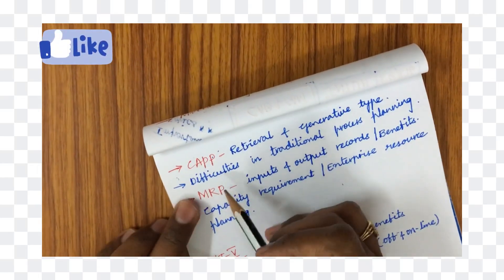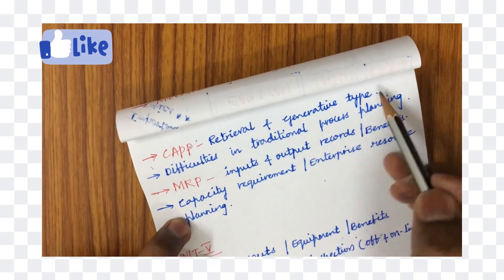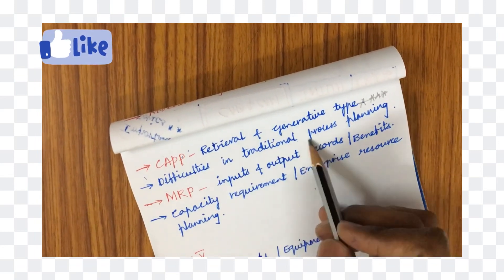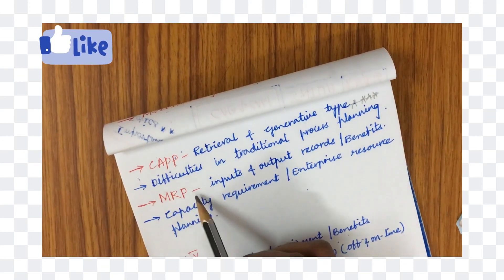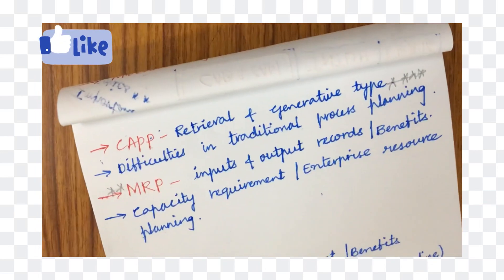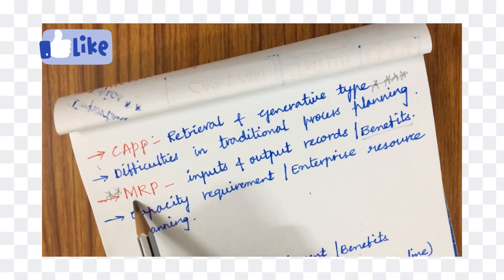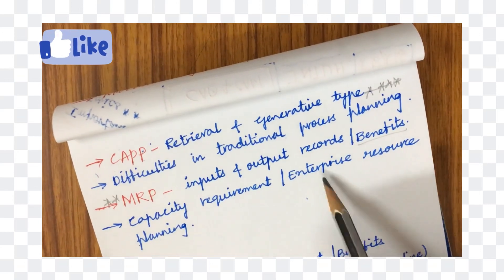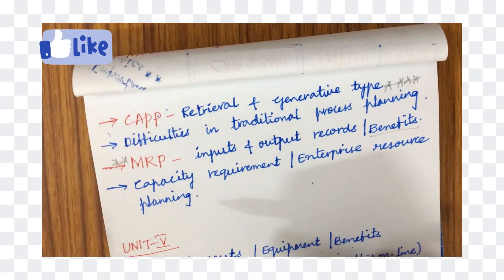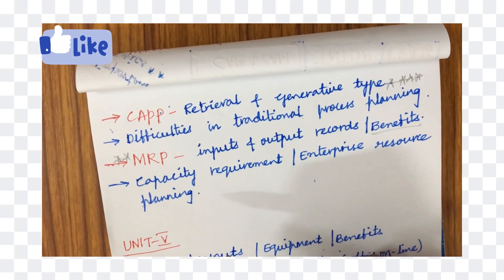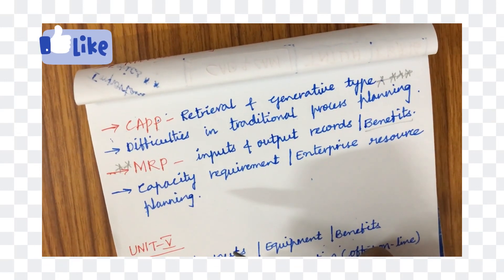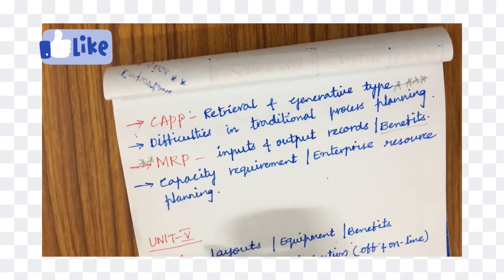Computer-aided process planning — retrieval as well as generative type — is one of the most frequently asked questions across various regulation papers. Difficulties in traditional process planning as well as material and manufacturing resource planning is also a subunit in unit 4. I am expecting two questions from unit 4 this time. Capacity requirement planning and enterprise resource planning are also included. CAD CAM follows a chain structure — skipping one unit makes the next unit harder to follow.